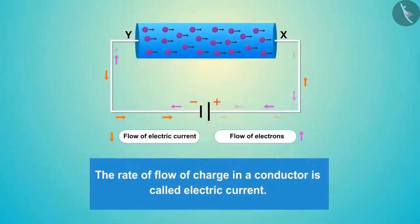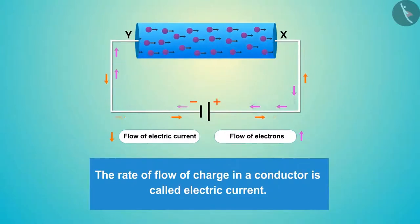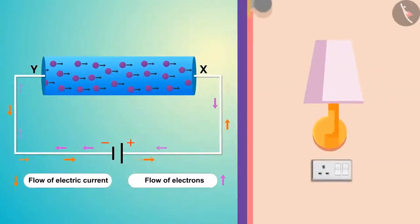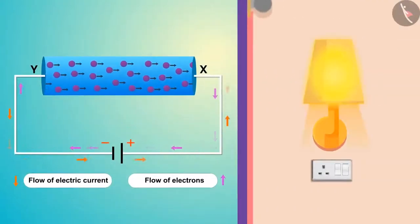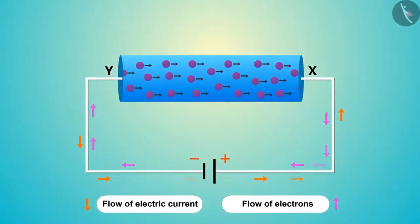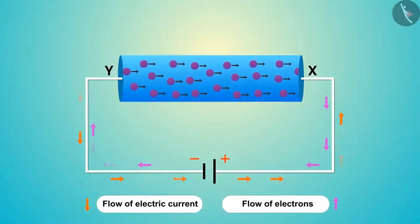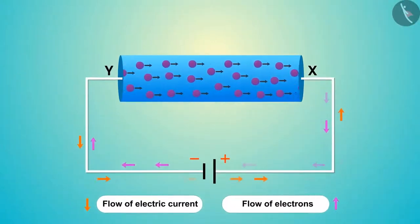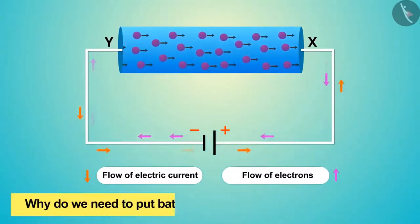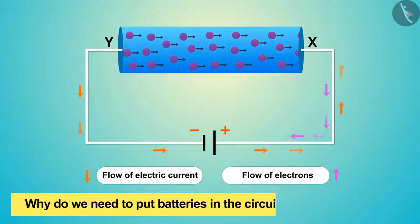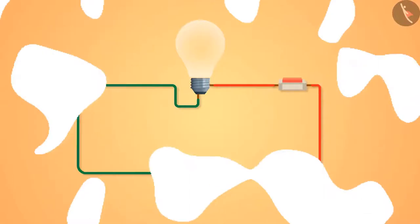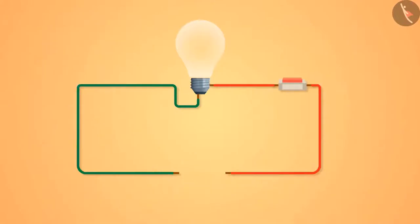The rate of flow of charge in a conductor is called electric current — this is the electric current that lights the bulb. We know that charge is always present in the metallic wires, so why do we need to put batteries in the circuit for the bulb to glow? Why is it necessary to put the battery?